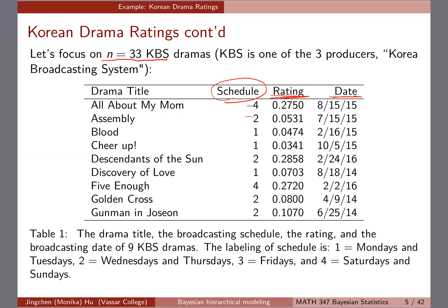The different schedules are: one is Monday and Tuesdays, two is Wednesday and Thursdays, three is Fridays, and four is Saturdays and Sundays. Right now we're looking at just one particular producer, KBS. Within it, you already have four different schedules of broadcasting.